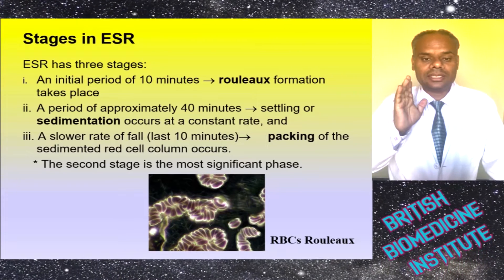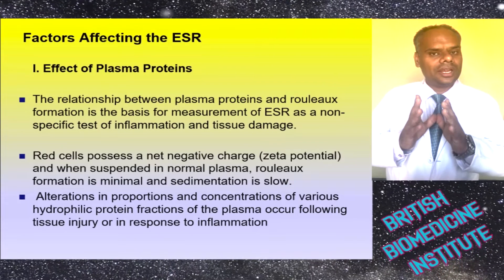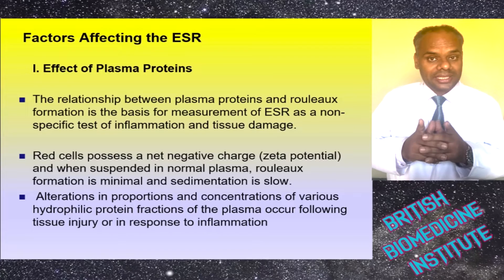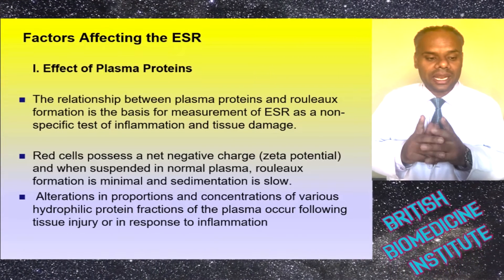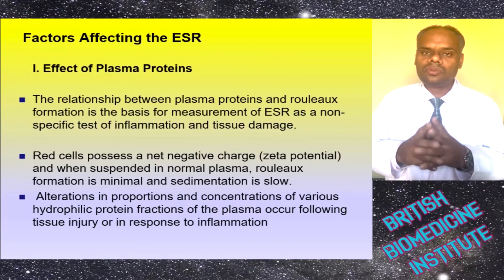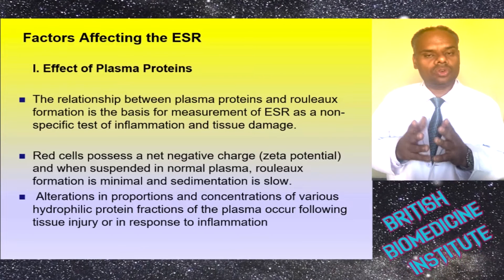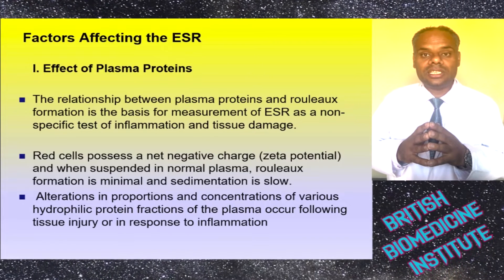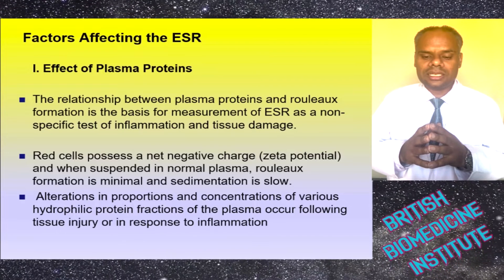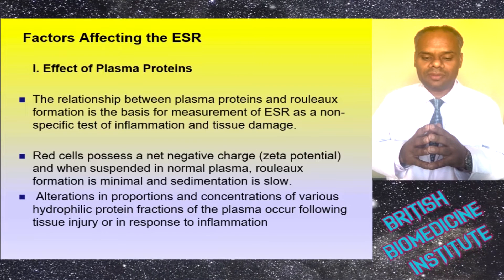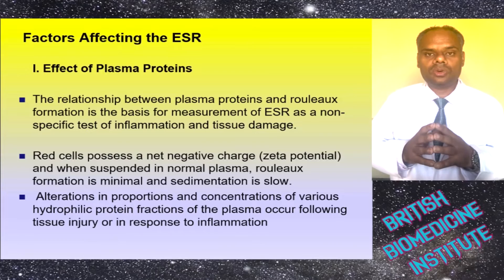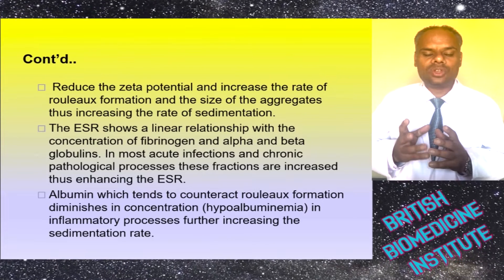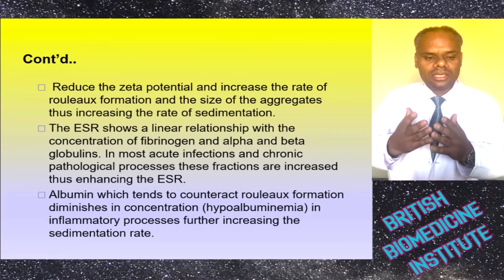The first factor affecting ESR is the effect of plasma proteins. The relationship between plasma proteins and rouleaux formation is the basis of ESR as a non-specific test of inflammation and tissue damage. Red cells possess a net negative charge, or zeta potential. When suspended in normal plasma, rouleaux formation is minimal and sedimentation is slow. Alterations in the proportion and concentration of various hydrophilic protein fractions of the plasma occur following tissue injury and in response to inflammation, reducing zeta potential and increasing the rate of rouleaux formation and the size of aggregates, thus increasing the rate of sedimentation.